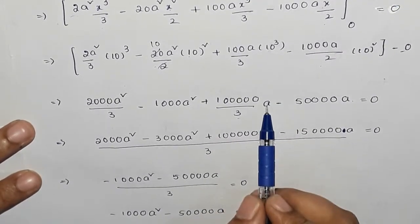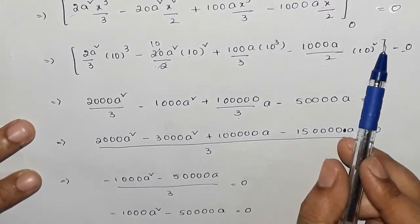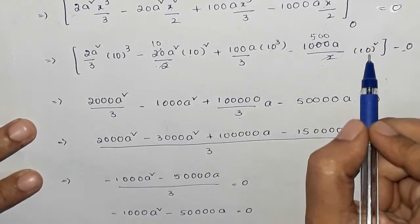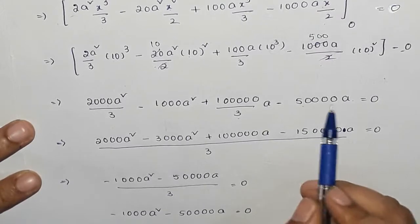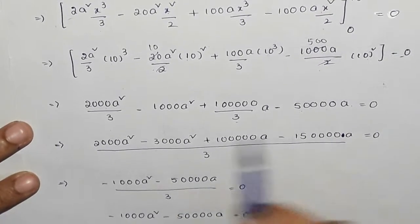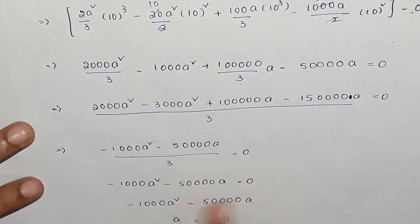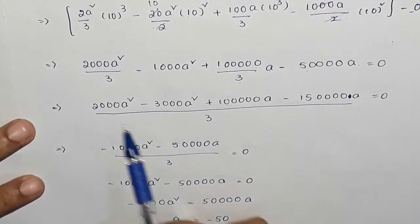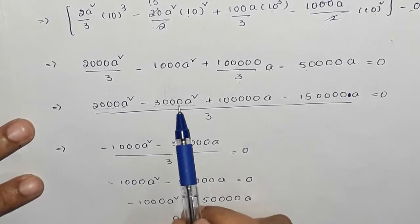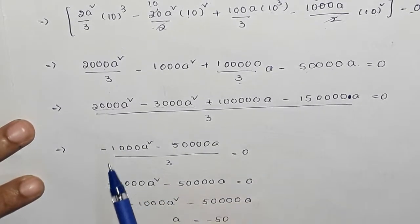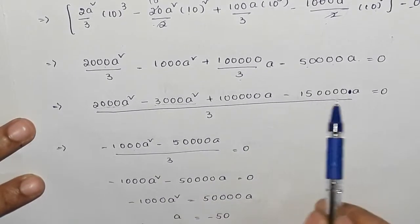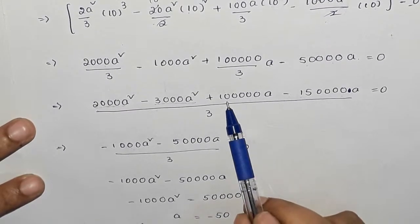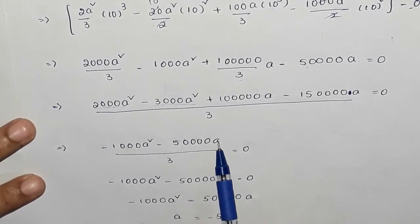Simplifying: 1000 × 100 cancels to give 50,000a. Taking LCM of 3 and combining terms, we get −3000 and 2000 equaling 1000, plus 150,000a and 10,000a, giving us 50,000a divided by 3.